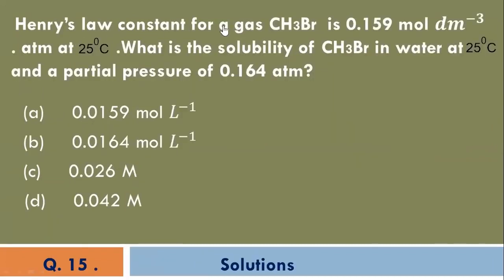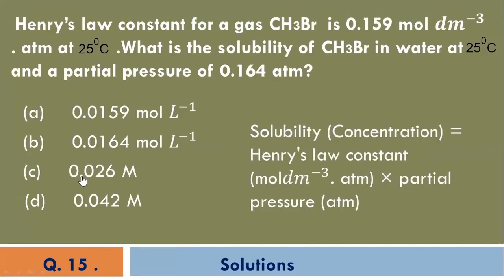Henry's law constant for gas methyl bromide is 0.159 mol per dm cubed atmosphere at 25 degrees Celsius. What is the solubility of methyl bromide in water at 25 degrees Celsius and a partial pressure of 0.164 atmosphere? We have 0.026 mol.